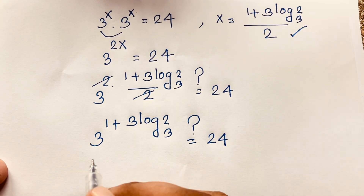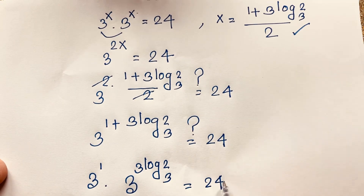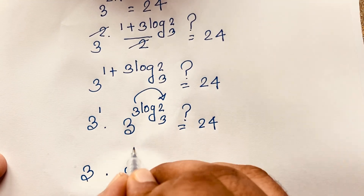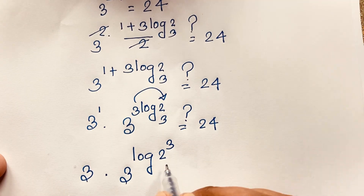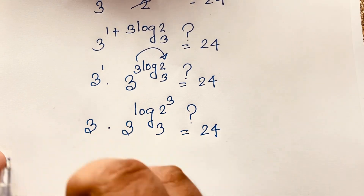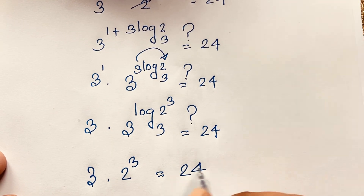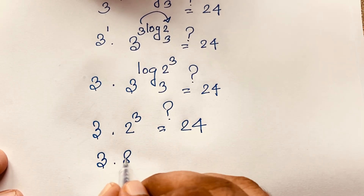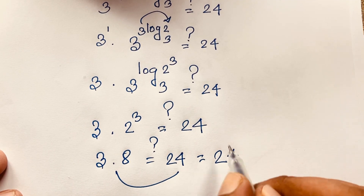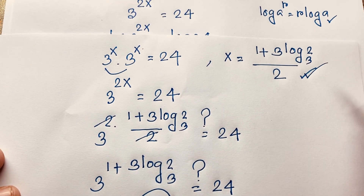Now here, 3 to the power 1 times 3 to the power 3·log₃2 equals 24. I apply the exponential formula, so it will be 3 times 3 to the power log₃(2³), and using the identity a^(log_a b) = b, it will be 3 times 2 to the power 3 equals 24. Now you can see easily here 3 times 8 equals 24. So left-hand side and right-hand side are both equal. So x equals (1 plus 3·log₃2) over 2 is confirmed as our final answer in this math Olympiad question.